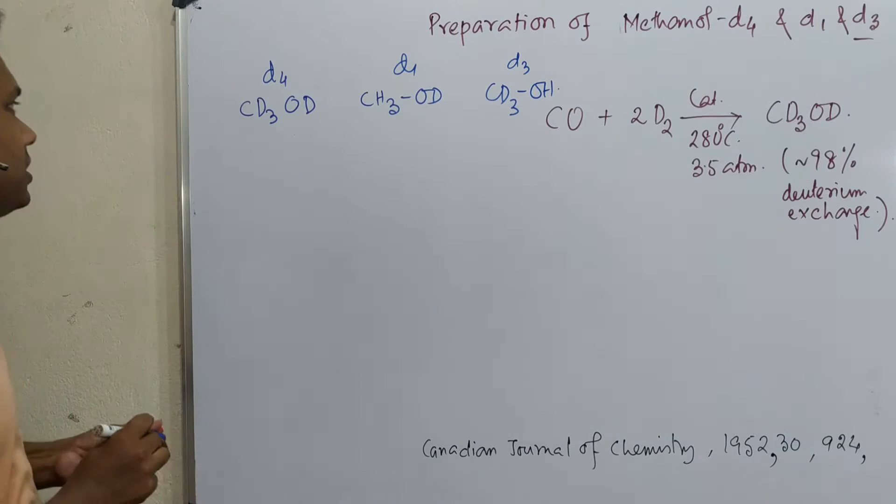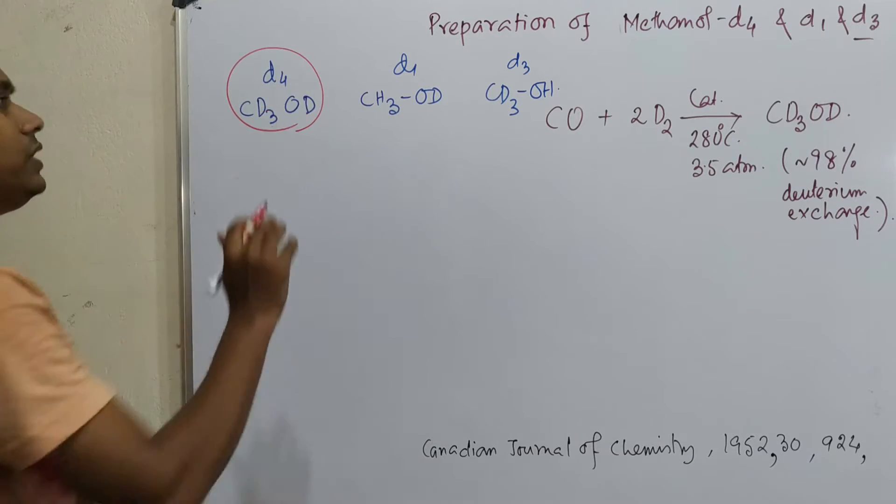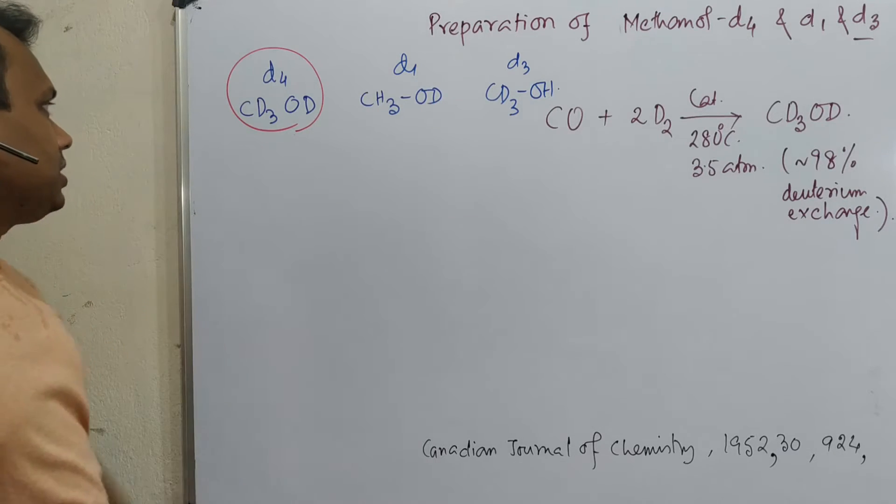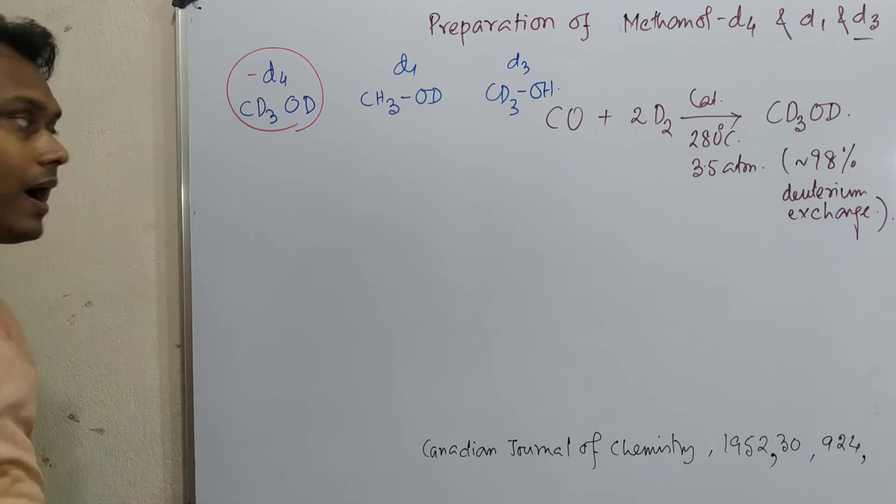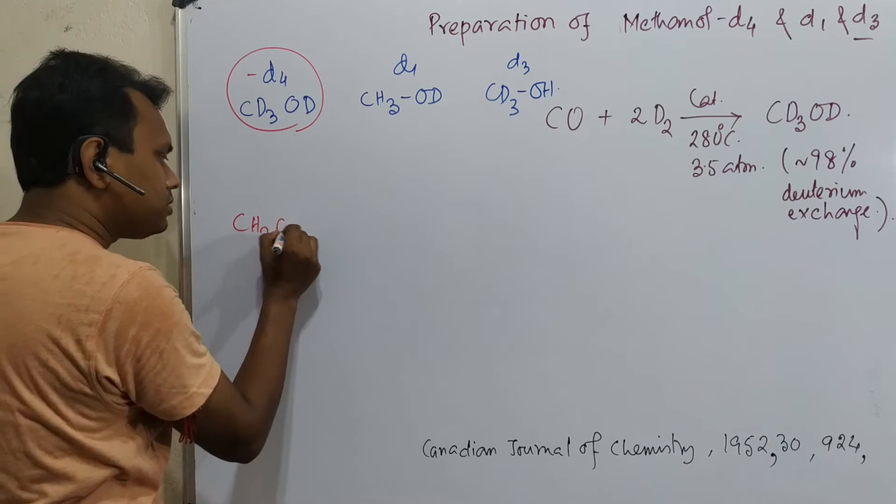Actually, the most important is this one, methanol D4. So this is the methanol D4. Why? Because if you look at methanol, methanol means CH3OH, or if we write CH4O.